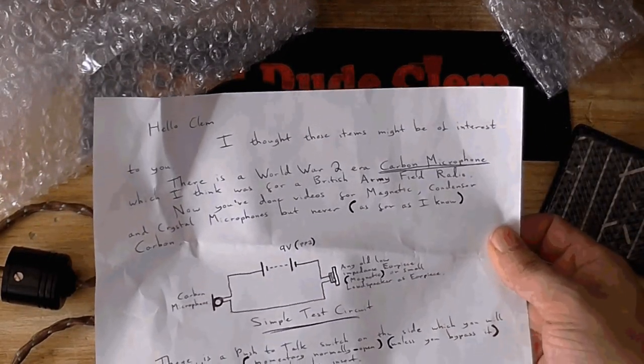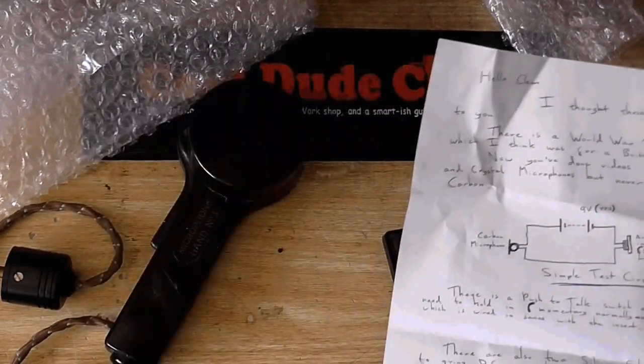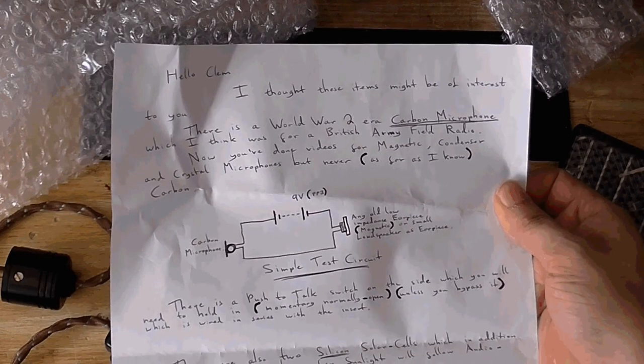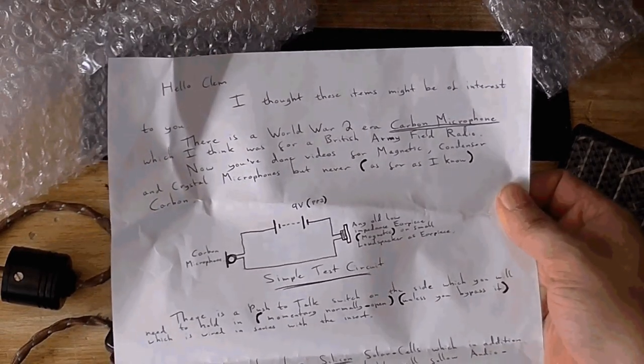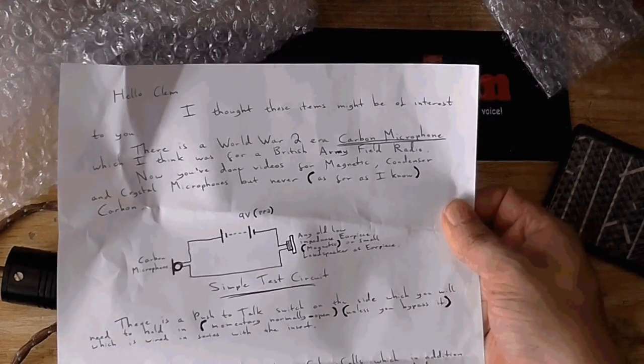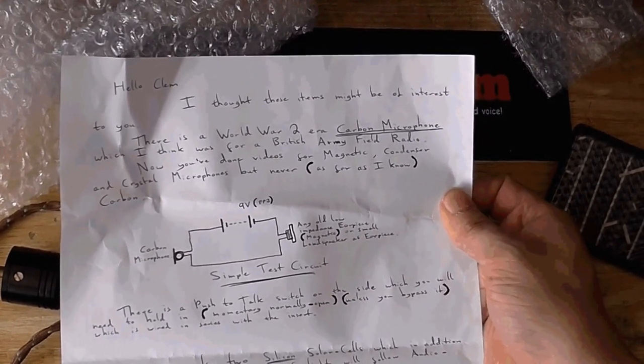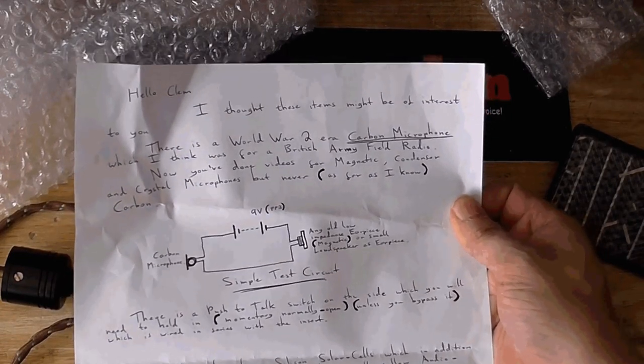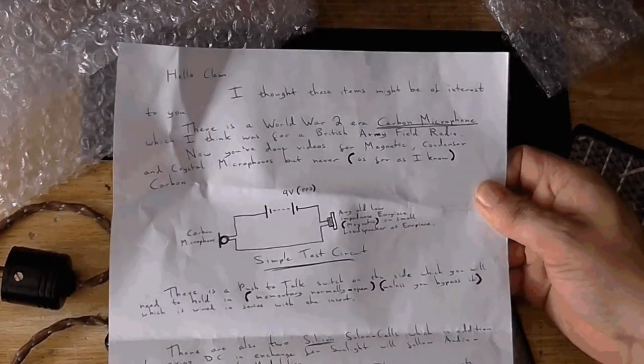Let's see. Hello Clem. I thought these items might be of interest to you. Well, this certainly is. There is a World War II era carbon microphone, which I think was for a British Army field radio. I know you've done videos for magnetic, condenser, and crystal microphones, but never, as far as I know, carbon microphones.